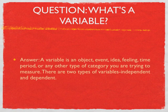What is a variable, first of all? A variable is an object, event, idea, feeling, time period, or any other type of category you are trying to measure. And there are two types of variables: independent and dependent.